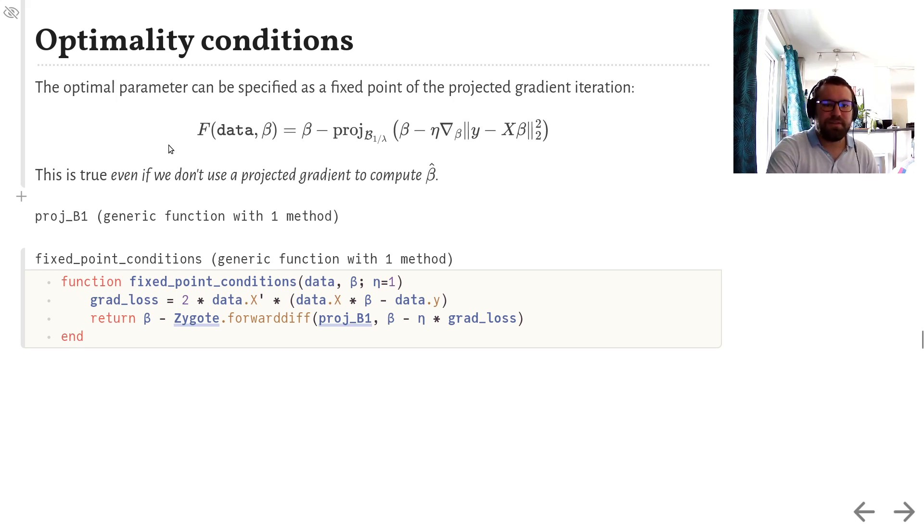The only thing that matters is that we could have used the projected gradient algorithm. So, to implement this condition, we need to define the projection onto the ball with respect to the L1 norm. I won't show it here. And then, the fixed point conditions are actually pretty simple to write.